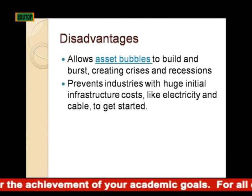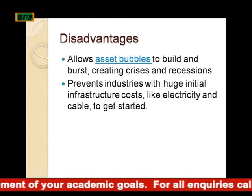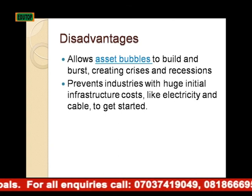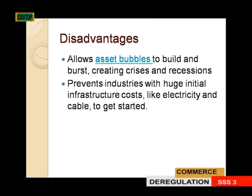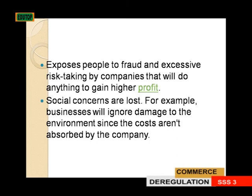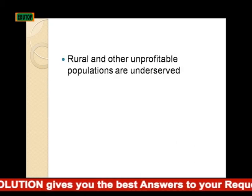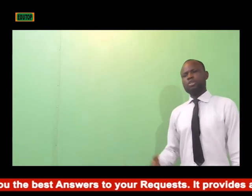Disadvantages of deregulation: It allows asset bubbles to build and bust, creating crises and recessions. It prevents industries with huge initial infrastructure costs like electricity and cable from getting started. It exposes people to fraud and excessive risks taken by companies that will do anything to gain higher profits. Social concerns are lost — for example, businesses will ignore damage to the environment since the costs are not absorbed by the company. Rural and other unprofitable populations are underserved.